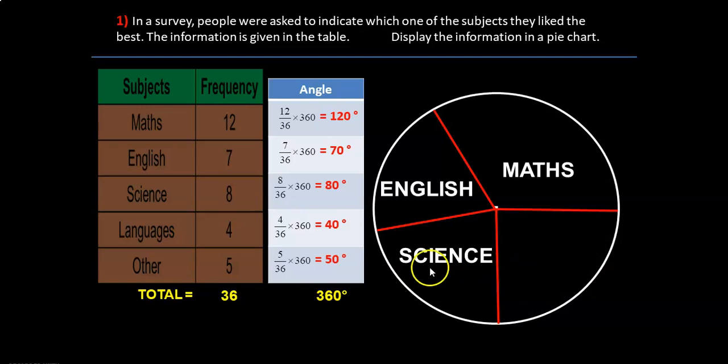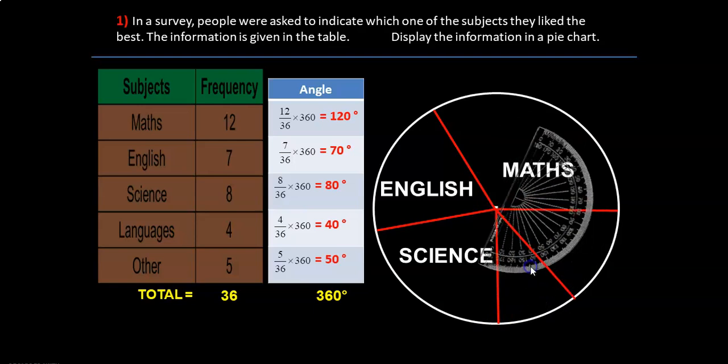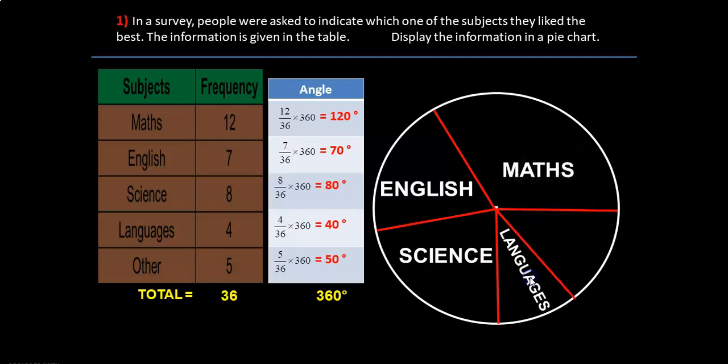And then we need to divide this into 40 and 50 degrees. For language we need 40 degrees. This is our baseline here. 40 degrees over here. And then we draw a line and write down, label the sector by the subject and others. Remember you should always label the sectors in a pie chart. In case if you don't have enough space, then you can use a key just outside the circle. Shade different sectors with different colors and then use a key.